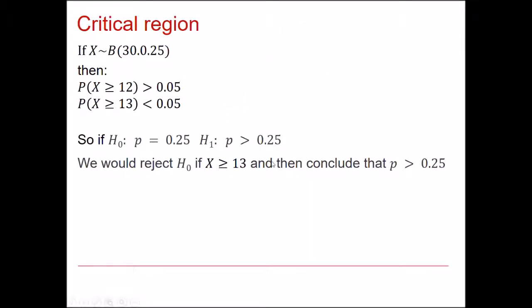And that's what it says on this slide here. The probability that X is greater than or equal to 12 is bigger than the 5%, so we would accept H0 at that stage and say the dice is fair. However, if it's 13 or more, then that's less than 5%. So we would reject H0 in that instance and conclude that the probability of getting a 1 on the dice is greater than a quarter. The effective levels of significance is 2.16% because that's actually the probability of getting 13 or more ones.